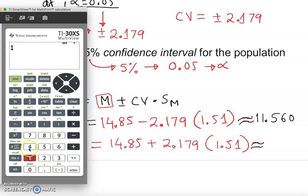Second one, you can write it 14 point... same thing, just without the minus, this time is going to be plus 14.85 plus 2.179 times 1.51.